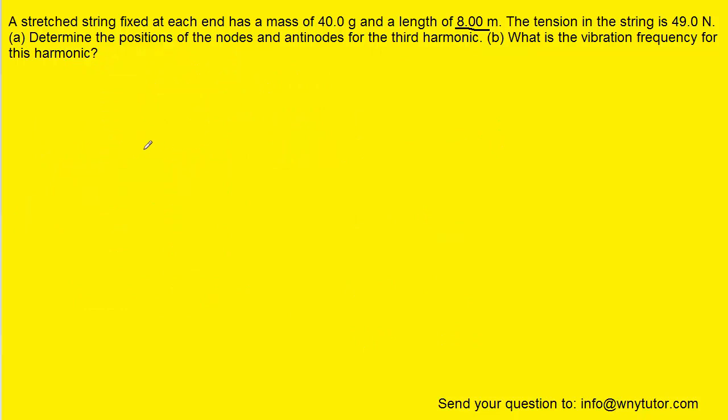Now for part B to calculate the vibration frequency of the third harmonic we have to recall that the frequency would equal the speed of the wave divided by its wavelength. Now we've already figured out the wavelength of course, what we need is to calculate the speed.